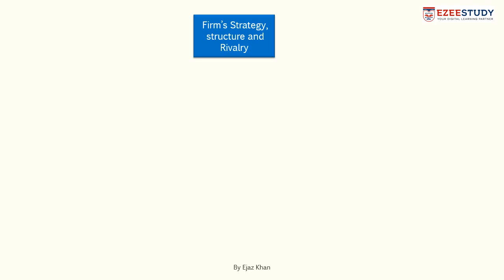Then comes the firm's strategy, structure and rivalry. When we say strategy, we mean the way the home competitors compete with each other. For example, if in the home market the competitors compete by following a cost leadership strategy, it will mean that they will gain the expertise of reducing their costs and producing low-cost products. So if over a period of time they have gained this capability, they will have gained the skill to produce low-cost products and will have more chance to compete in international markets where products are price sensitive.